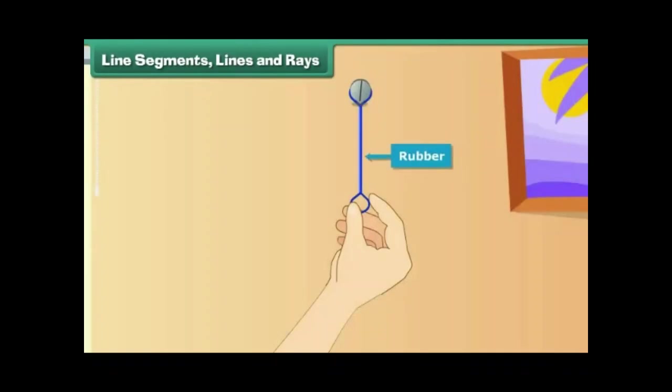Look at this thin strip of rubber. Let us nail it to the wall and name the point C. The other end of the rubber is free. Let us stretch it - first a little, then a little more, and then some more. What we get is a ray.